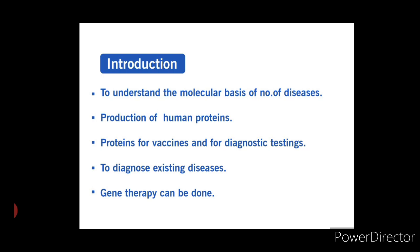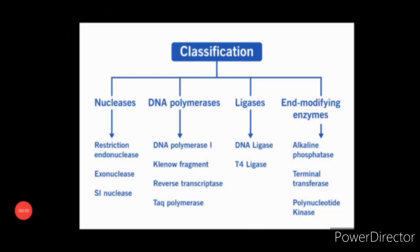Fifth, gene therapy for sickle cell disease, thalassemia, adenosine deaminase deficiency, and other diseases may be devised. Now let us understand the broad classification of enzymes used in gene cloning. Enzymes used in gene cloning are classified into four categories: first, nucleases; second, DNA polymerases; third, ligases; and fourth, end-modifying enzymes.